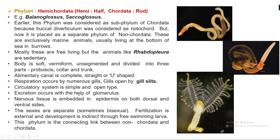The circulatory system is an open type and excretion occurs with the help of the glomerulus. Nervous tissue is embedded in the epidermis on both the dorsal and ventral sides. The sexes are separate, though some organisms are bisexual. Fertilization is external and development is indirect through a free-swimming larva. This phylum is a connecting link between non-Chordata and Chordata.